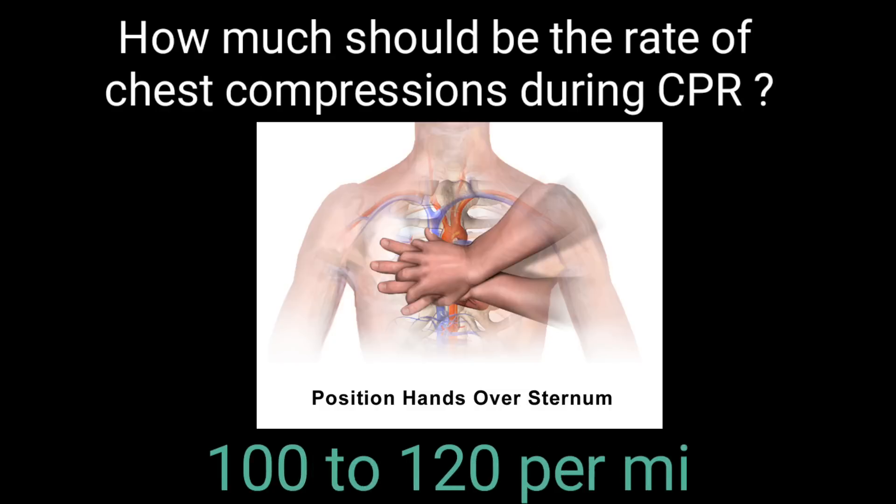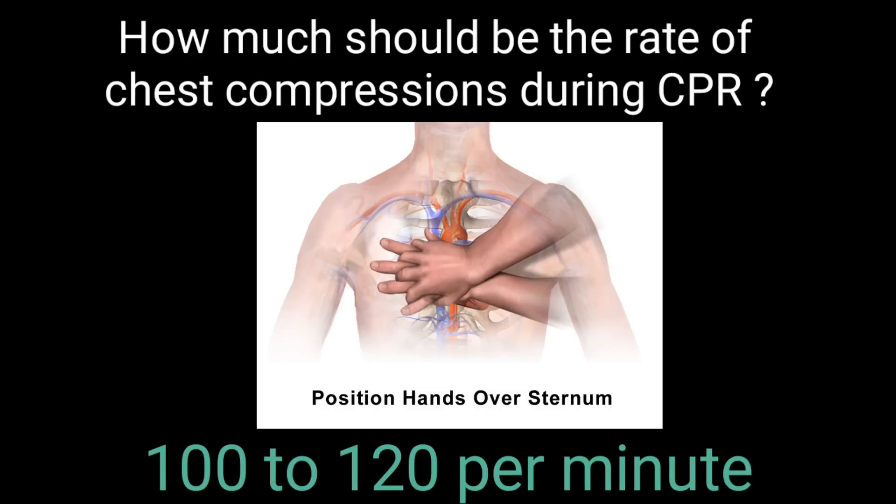How much should be the rate of chest compressions during CPR? 100 to 120 compressions per minute.